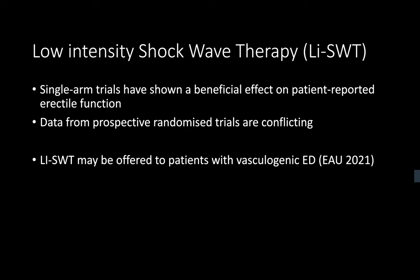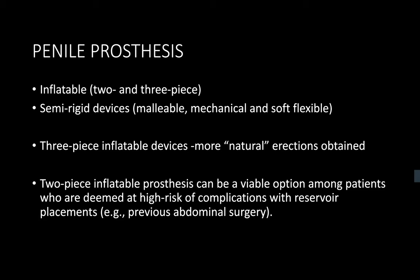The two options recommended were ICI and penile prosthesis. What types of penile prostheses are available now? They can be divided mainly into inflatable and semi-rigid. Inflatable can be further divided into two-piece and three-piece. Semi-rigid includes mainly malleable devices, but soft flexible and older mechanical ones are also available.